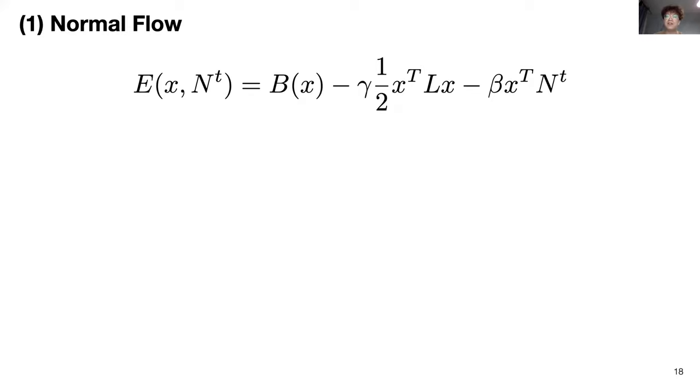Here, our first application is normal flow. We first define the normal direction n for each surface node and beta here is flow speed.